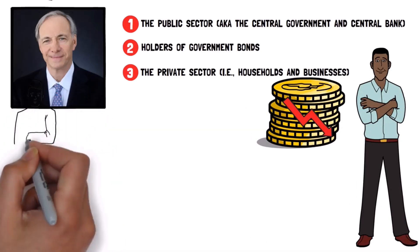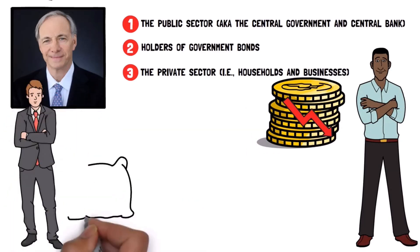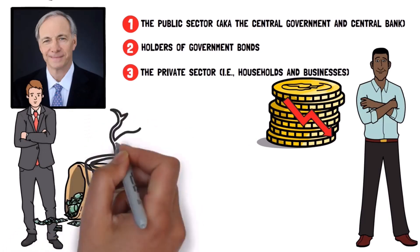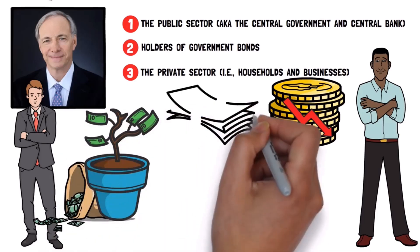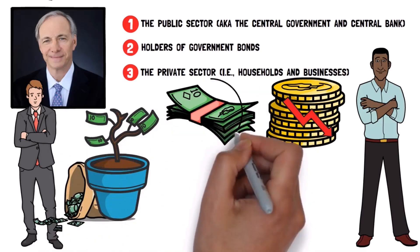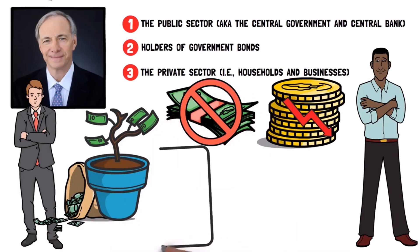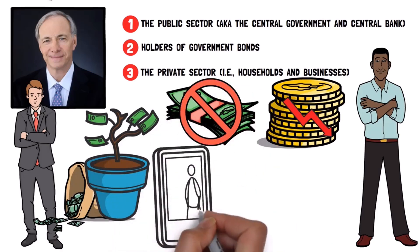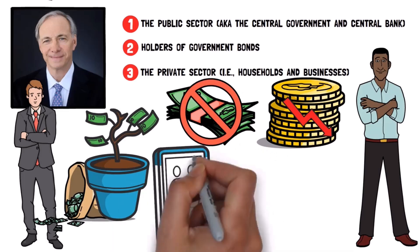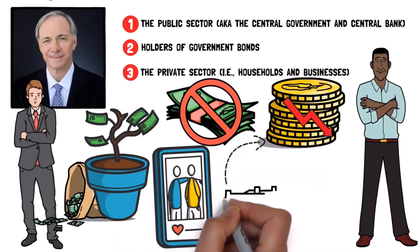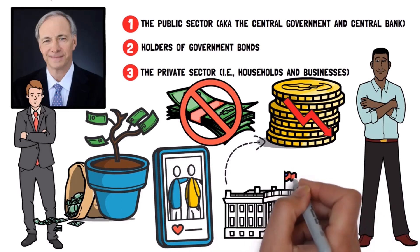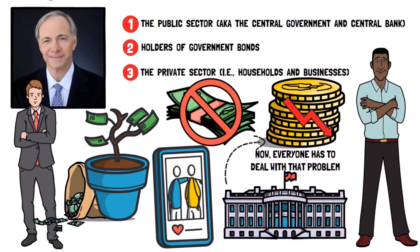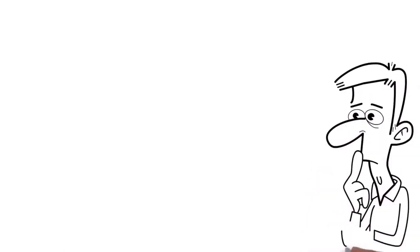Ray talked about how regular people are doing pretty well. They have good incomes, more savings and low unemployment, which means they're earning more money from their jobs. This also means they aren't affected much when the Federal Reserve makes it harder to borrow money. But the big issue Ray is talking about in this post is that in order to make regular people better off, the government and the Federal Reserve had to make their own finances worse. Now, everyone has to deal with that problem. So, how did this happen?